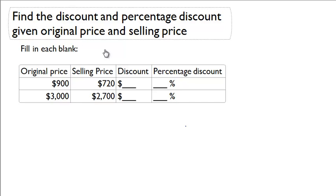Find the discount and percentage discount given original price and selling price. Below is a table. We're given original price and selling price, and we need to fill it in by calculating the discount and the percentage discount.